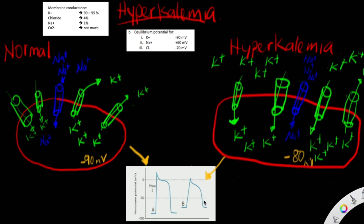During repolarization, the cell becomes more negative. Potassium moves out of the cell — potassium efflux. Since potassium has a positive charge, its movement out of the cell makes the cell more negative, so it repolarizes. Because we have hyperkalemia — more potassium outside of the cell — it is harder for potassium to move out of the cells compared to normal conditions, where there is less extracellular potassium. Therefore, potassium efflux is slowed, leading to a prolonged repolarization.